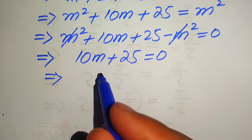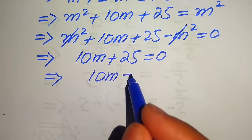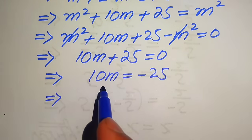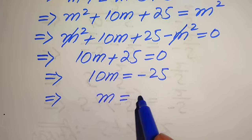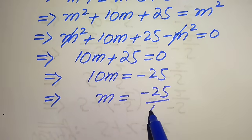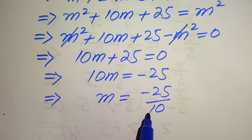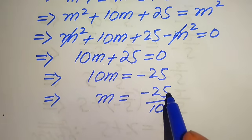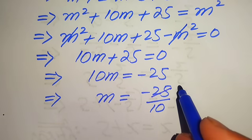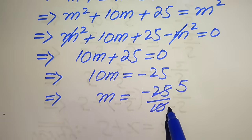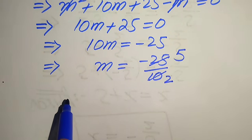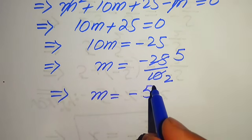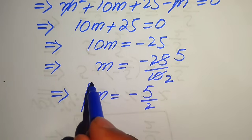We move 25 to the right hand side and get 10m equals to minus 25. Dividing both sides by 10 and canceling by the table of 5 — since 5 fives are 25 and 5 twos are 10 — we easily get the value of m is equals to minus 5 over 2. This is the final value of m in this problem.